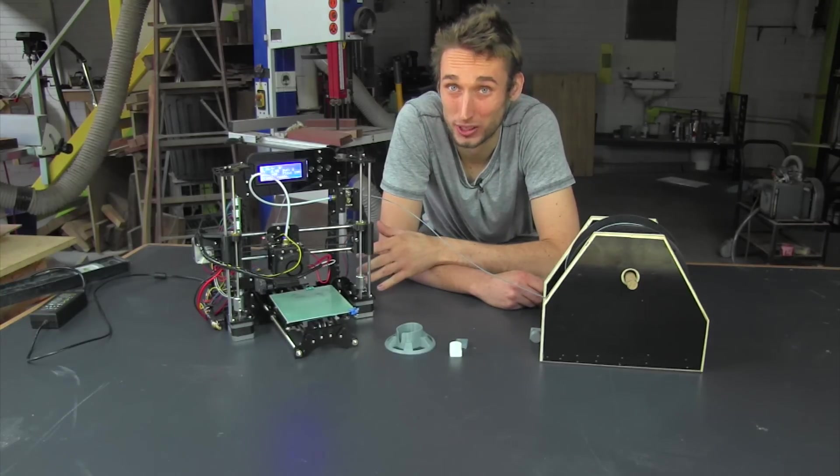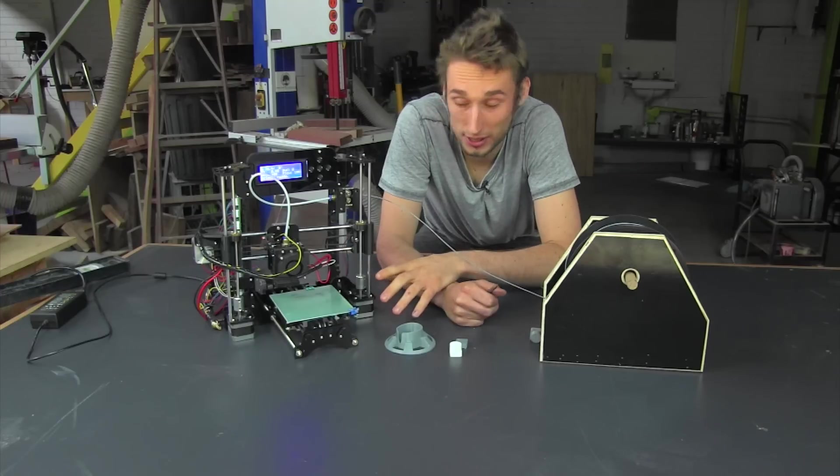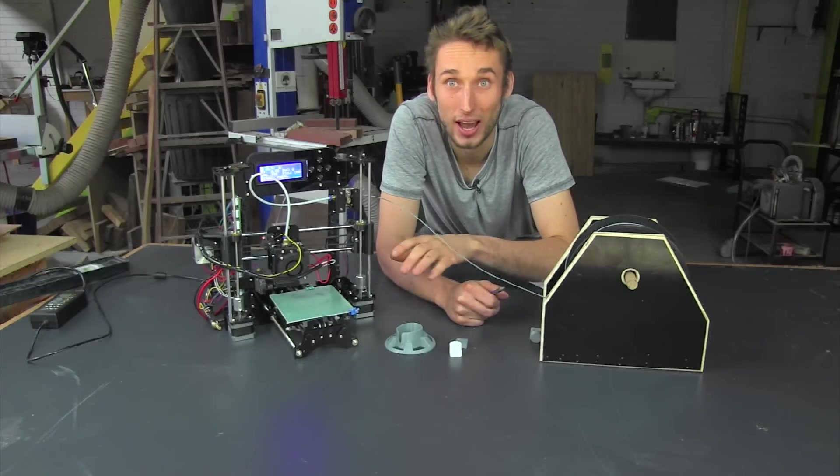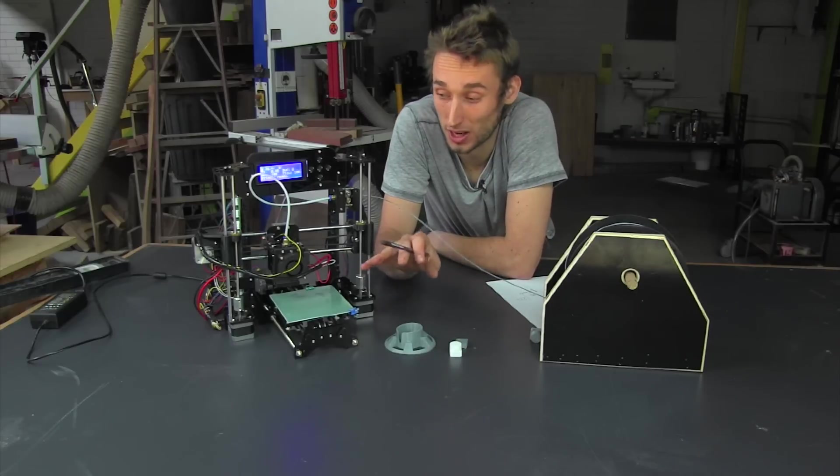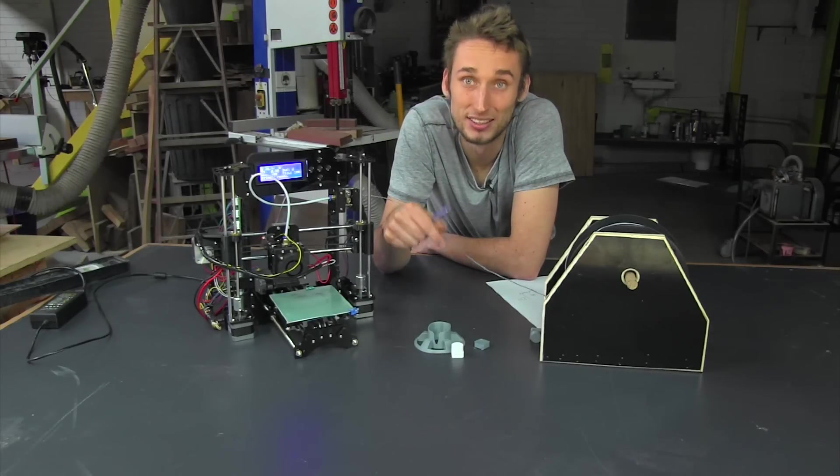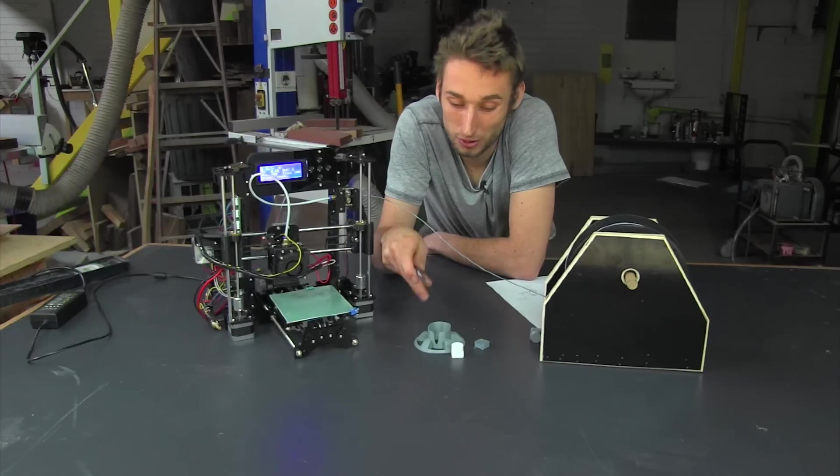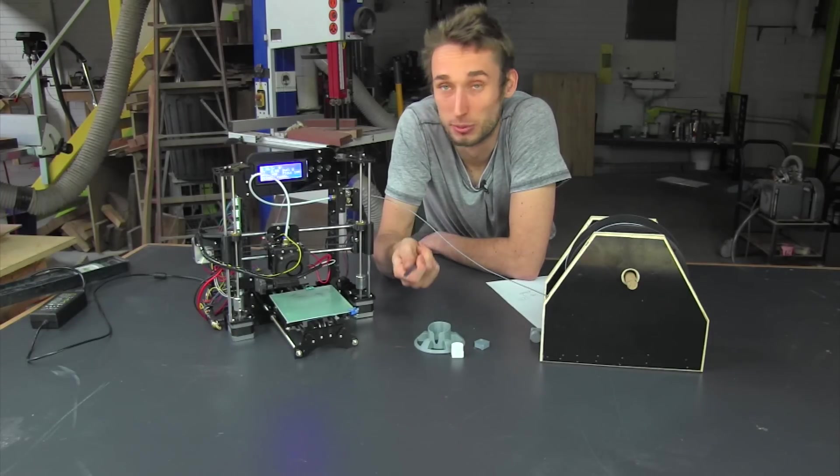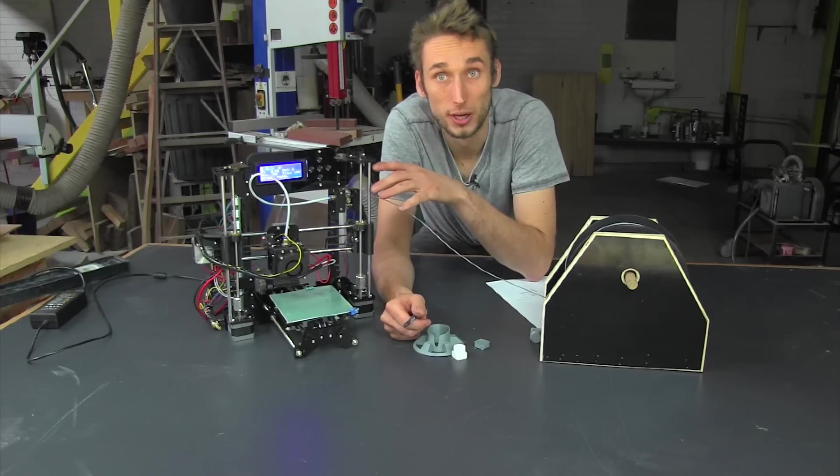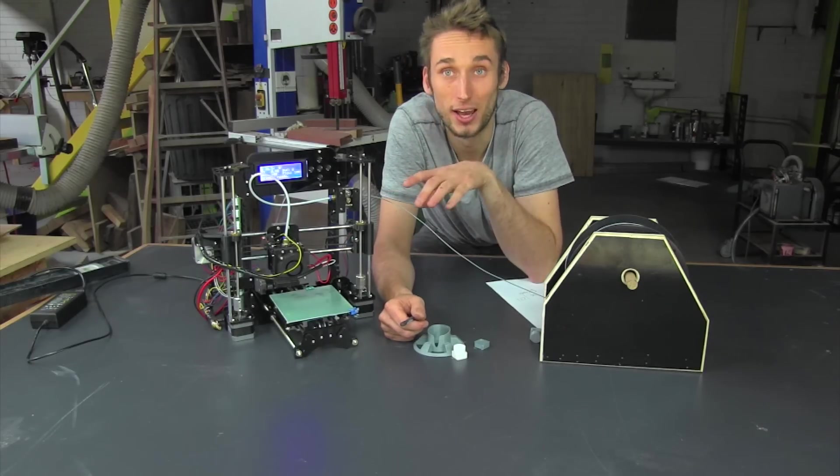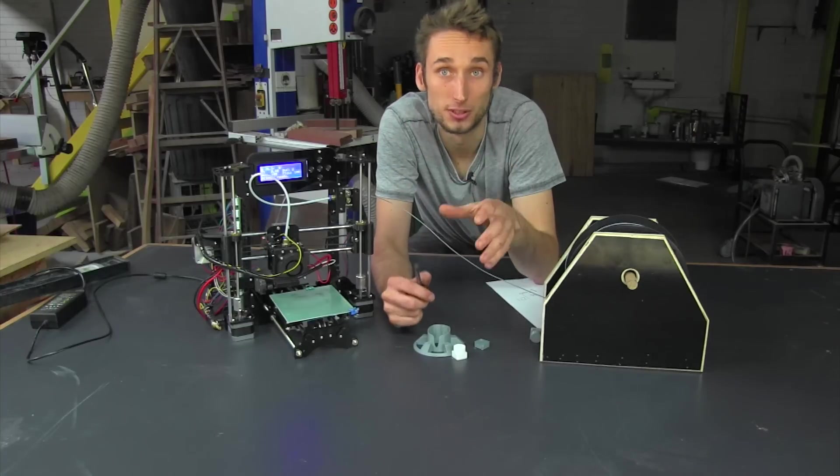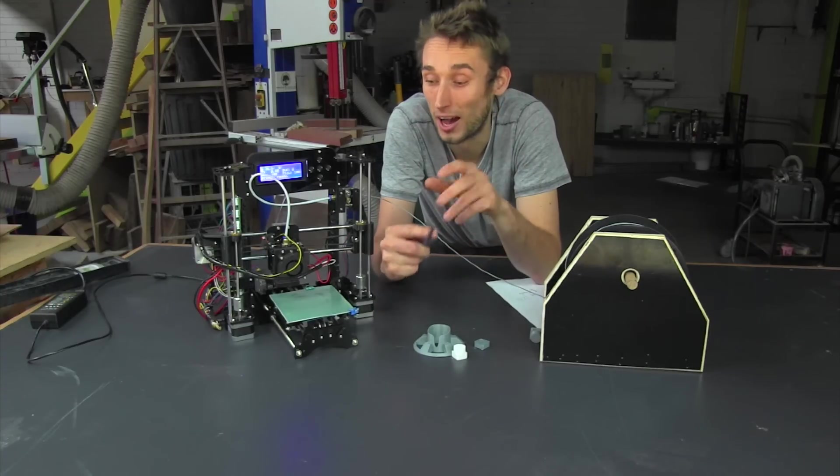This printer here is the Tronxy XY-100, which is a copy of the Anet A8. They're both pretty much identical machines. I have left links to this printer and the Anet A8 in the description below. They're both comparatively priced, they're both very similar, so really it's a personal choice. I am happy with the Tronxy, but I think if they had sent the Anet A8 I would have had a much easier time getting this thing working just because there's a lot more support out there when you're googling how to actually get the thing to print nicely.